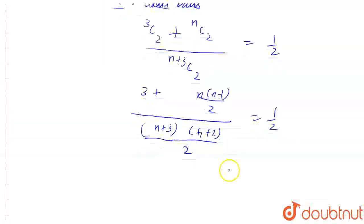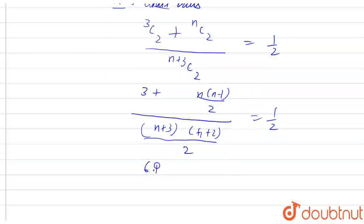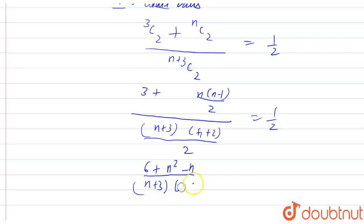On solving this equation, we will get 6 plus n squared minus n divided by n plus 3 into n plus 2, that will be equal to 1 by 2.